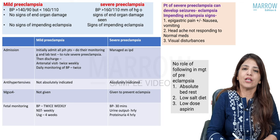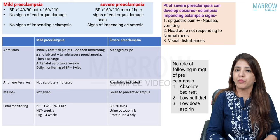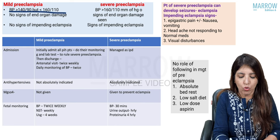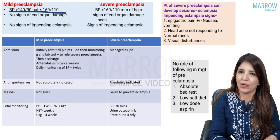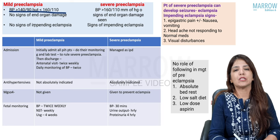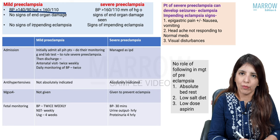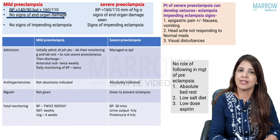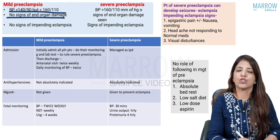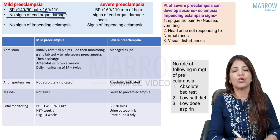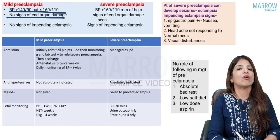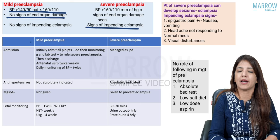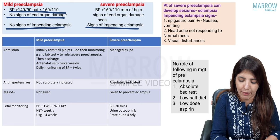In preeclampsia, there can be mild or severe forms. Mild preeclampsia means BP is more than 140 by 90 but less than 160 by 110. Severe preeclampsia means BP is more than or equal to 160 by 110. In mild preeclampsia you will never get signs of end organ damage, whereas in severe preeclampsia end organ damage will be present. Signs of impending eclampsia only occur in severe preeclampsia.